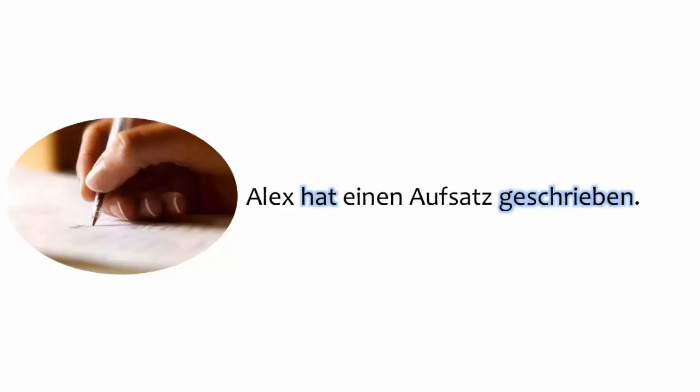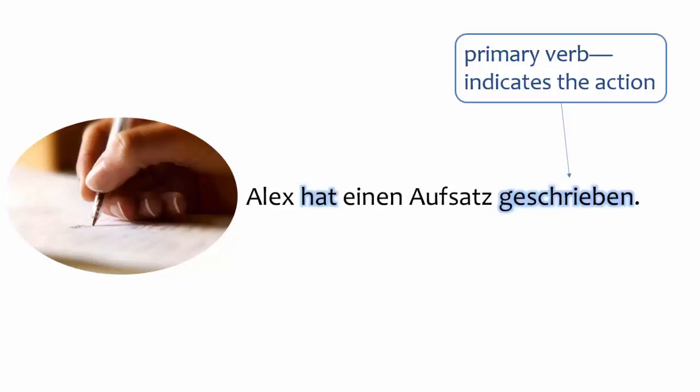Clauses in the compound past tense have two verbs: the helping verb and the past participle. These verbs always function together. The primary verb indicates the action. Note that the primary verb is in the past participle. For more on past participles, see the playlist.